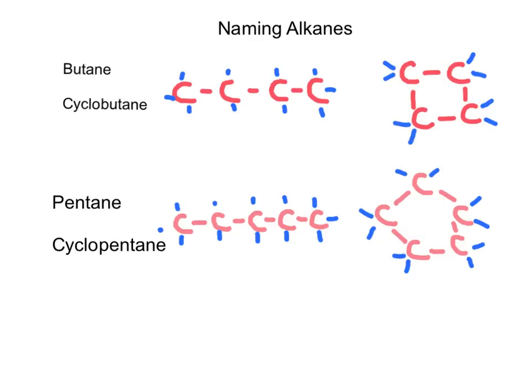We also show the molecule of pentane — one, two, three, four, five carbons. If it's a cyclic one, then we call it cyclopentane.